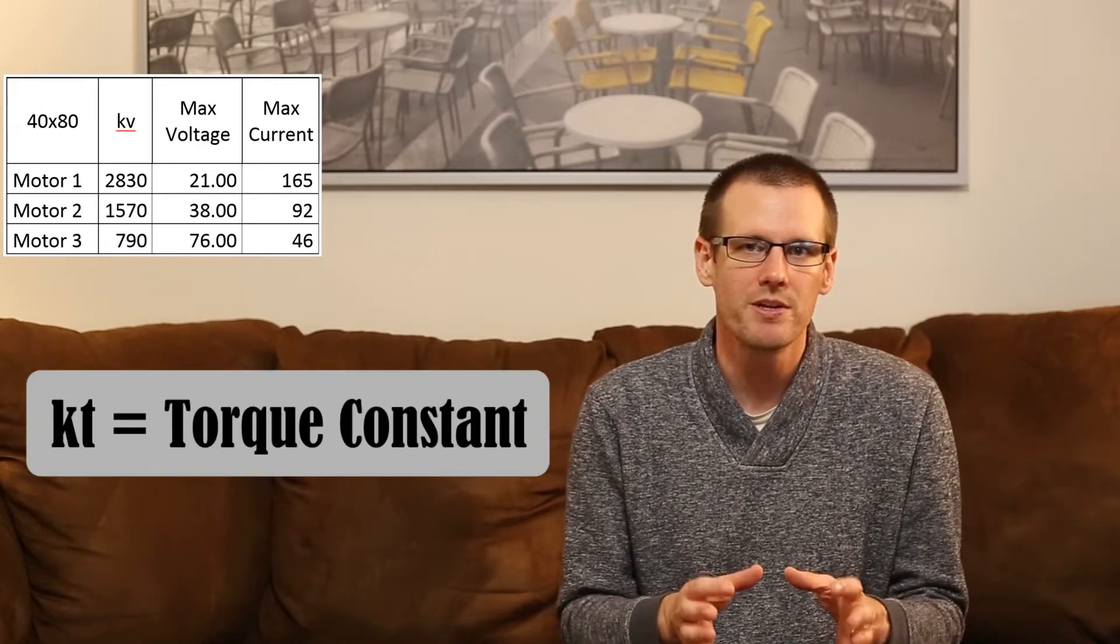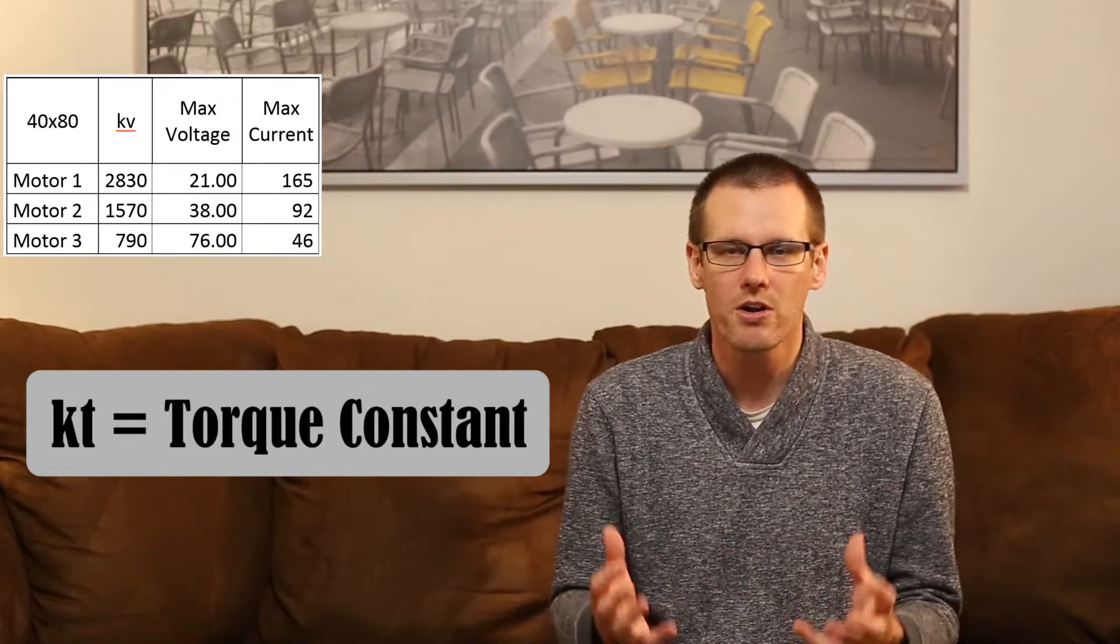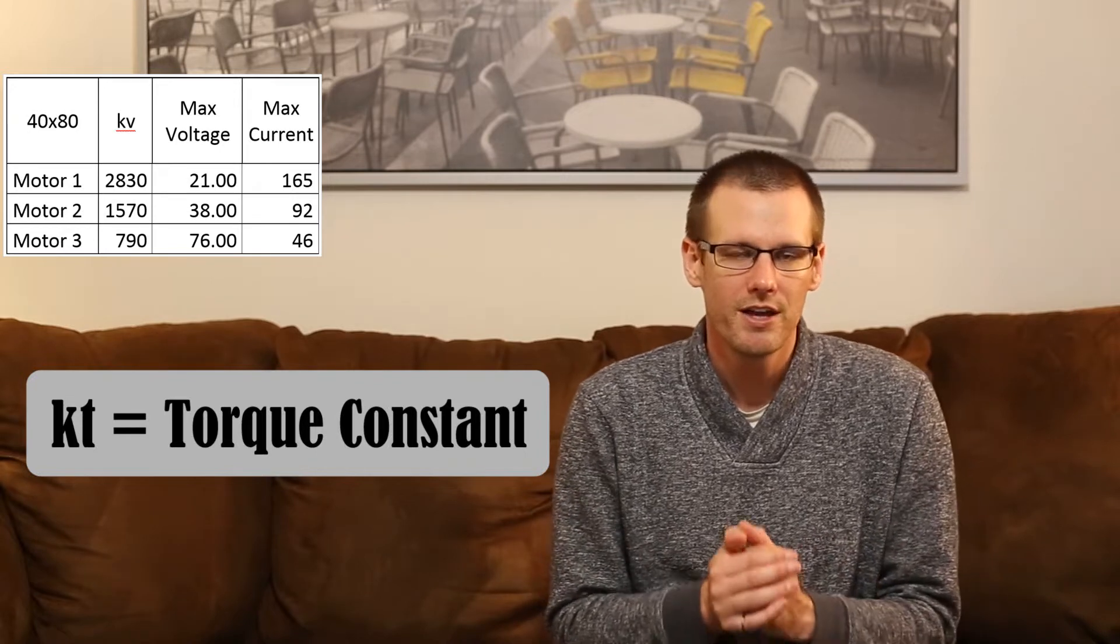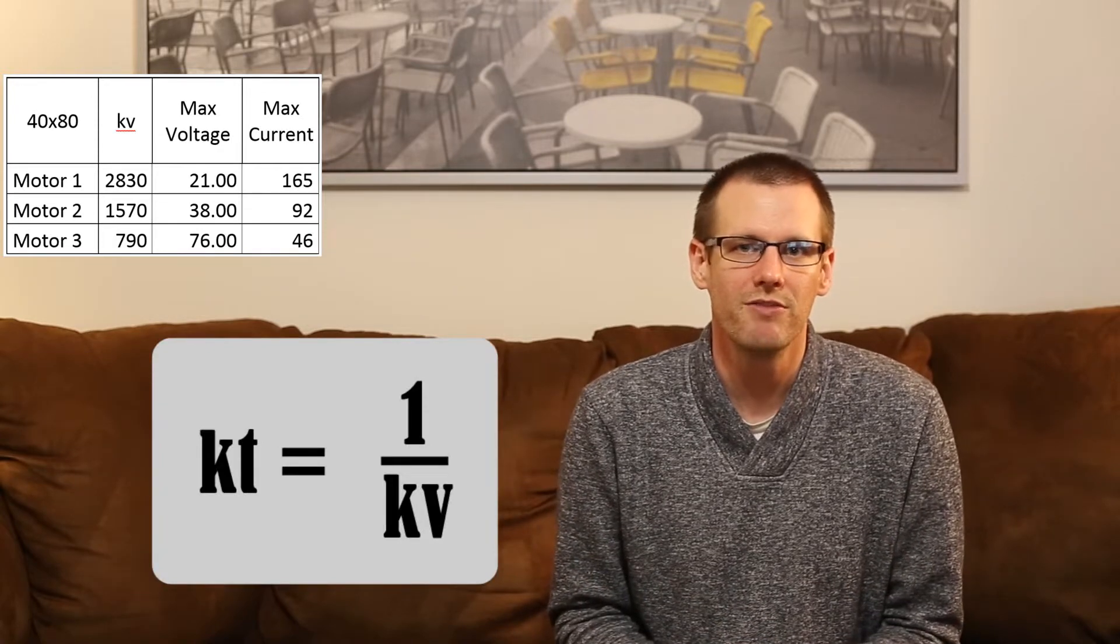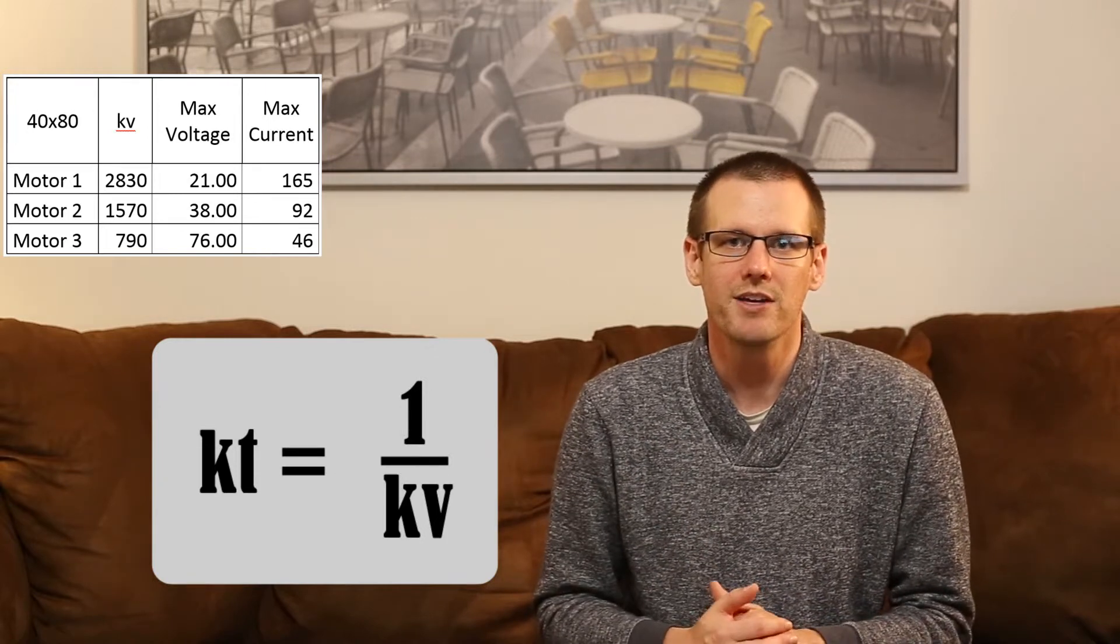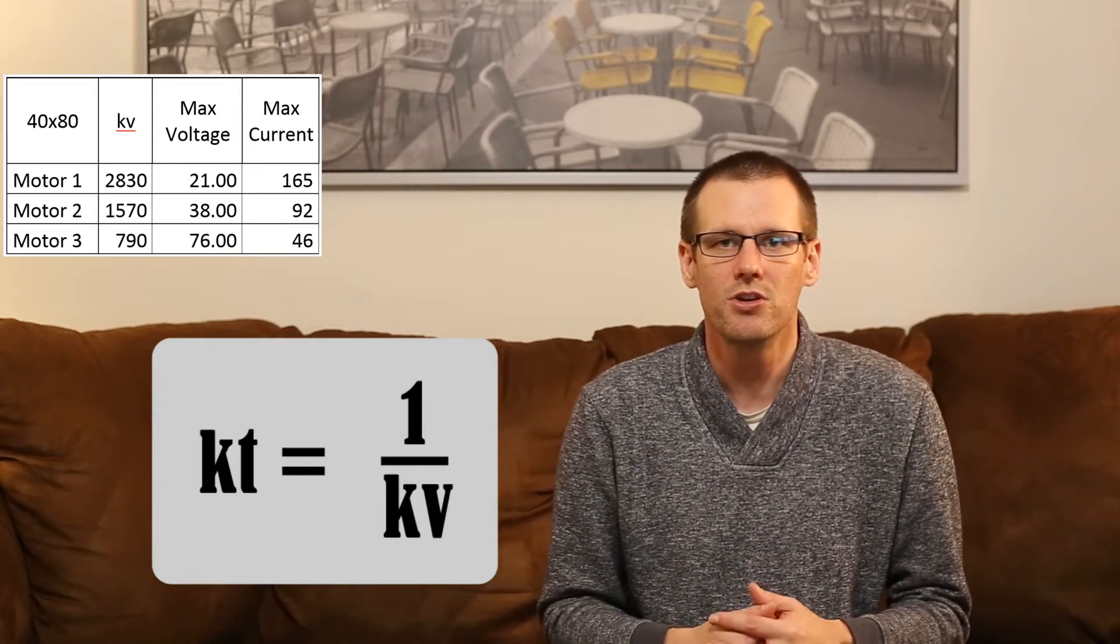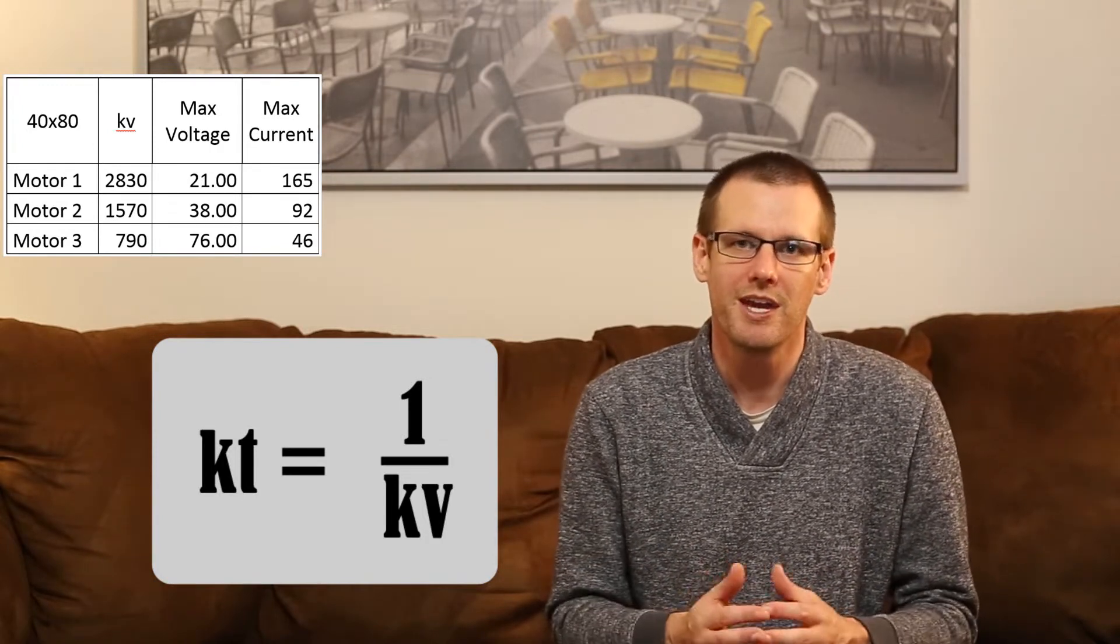Now we get into the interesting part, which is the KT value of the brushless motor. First question, what is the KT value of a brushless motor actually represent? Well, it represents the torque constant of the brushless motor. The next question is, how do you get the torque constant out of a brushless motor? Well, interestingly enough, the torque constant is simply just the inverse of the KV value. You take the KV value, you do one over that KV value, and you get the KT value. As long as you do your conversions correctly to maintain SI units, you will get the correct output value.